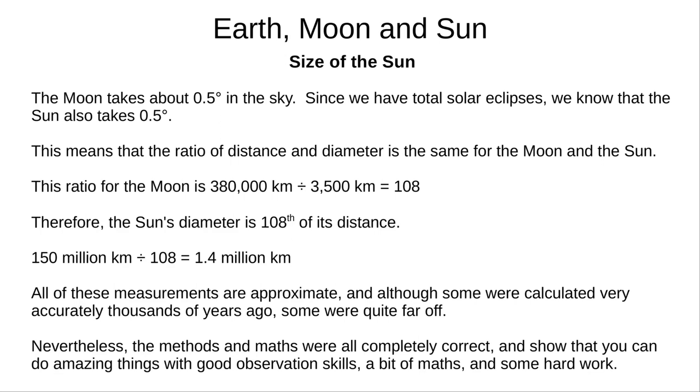About 0.5 degrees. We know that they take up the same angular size because we experience total solar eclipses. Now this means that the ratio of the distance over the diameter is the same for the sun as it is for the moon.